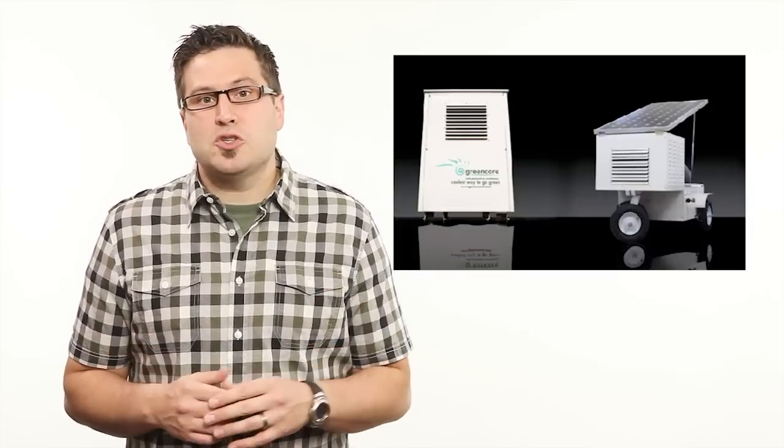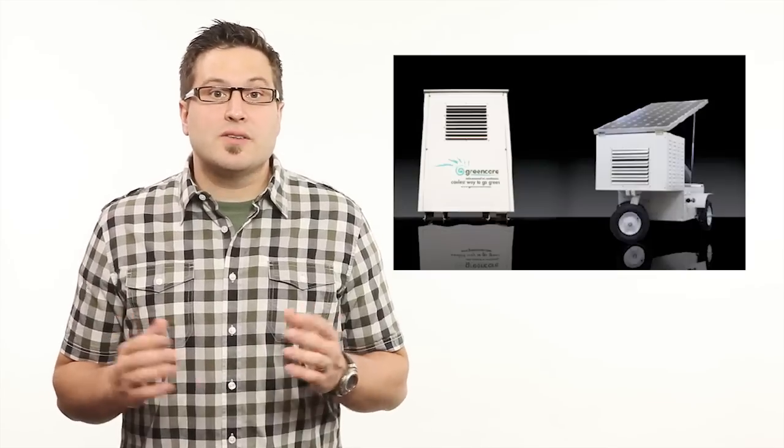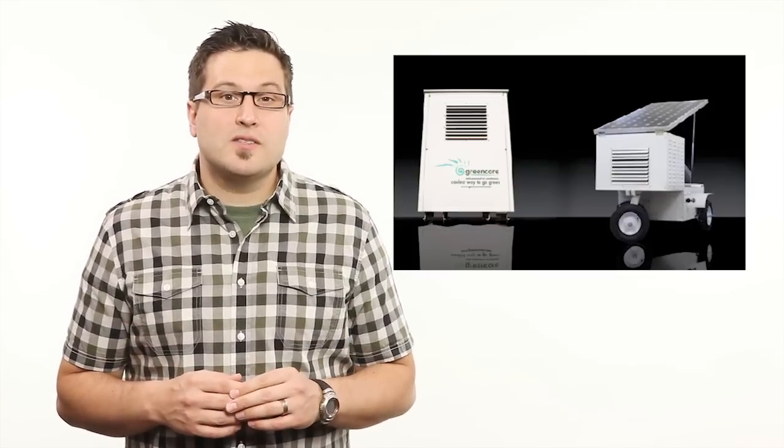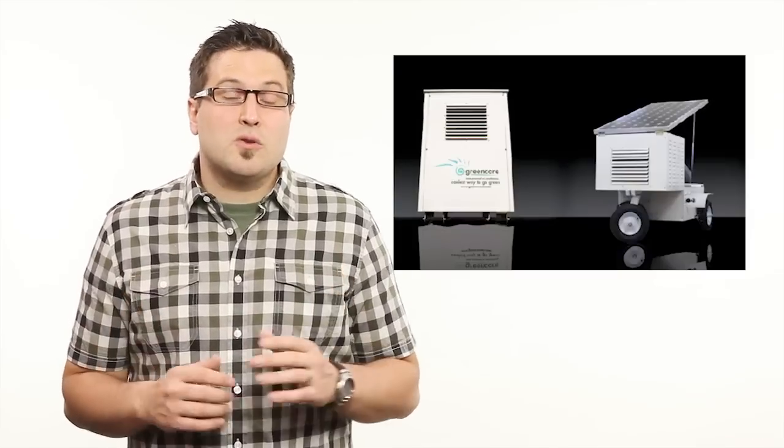One energy saving design is a solar powered air conditioner that uses solar energy to power the motors and fans. The green core air system is powered by a 170 watt solar panel and can be used entirely off the grid or as a solar battery hybrid.